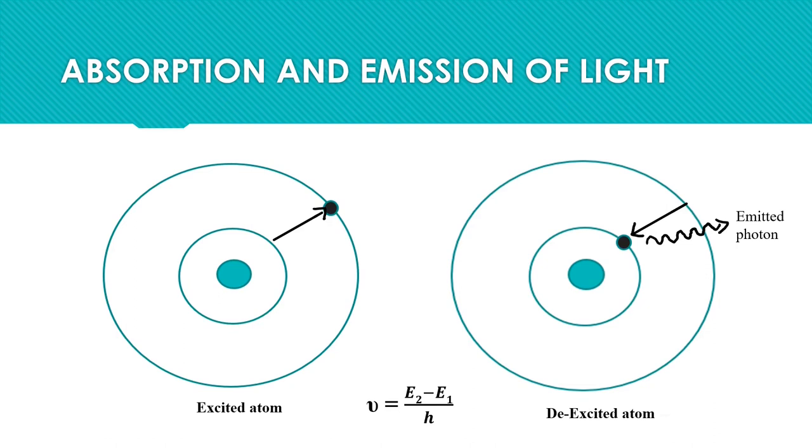If the molecule is illuminated with a light of appropriate frequency, ν = (E2 - E1)/h, or if we radiate with a photon of energy hν = E2 - E1, the electron will jump from lower energy level E1 to upper energy level E2.